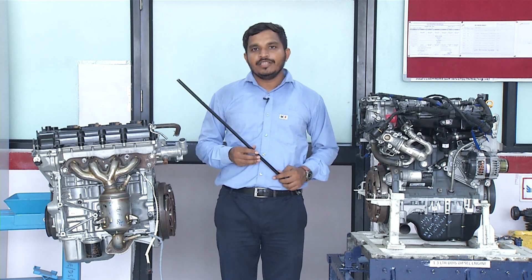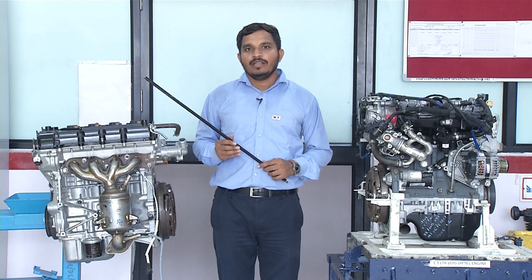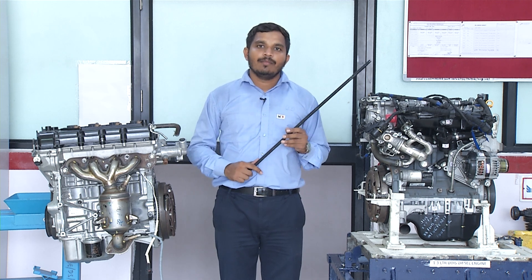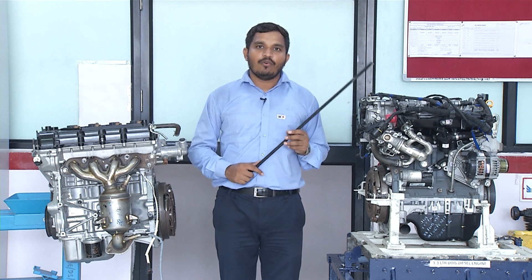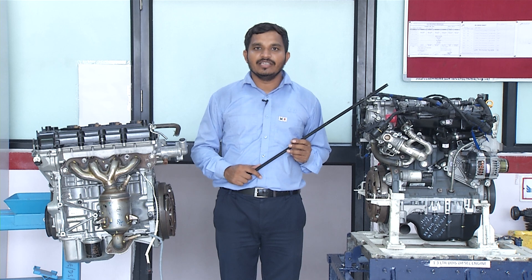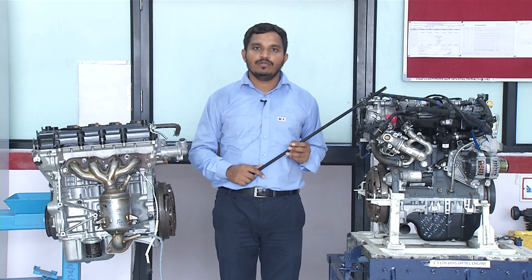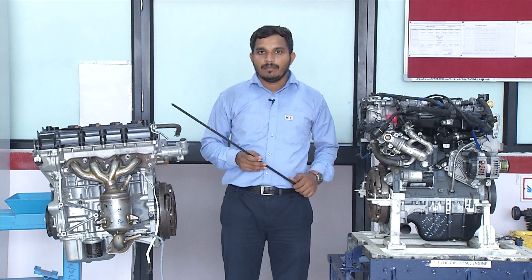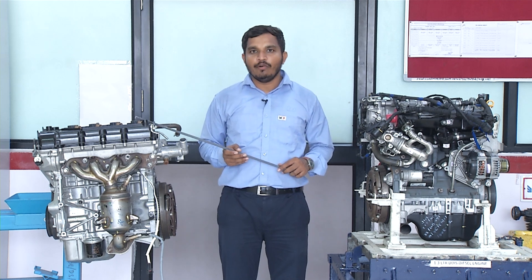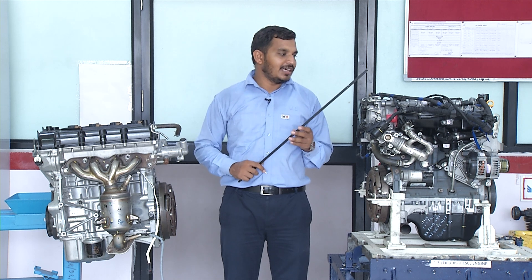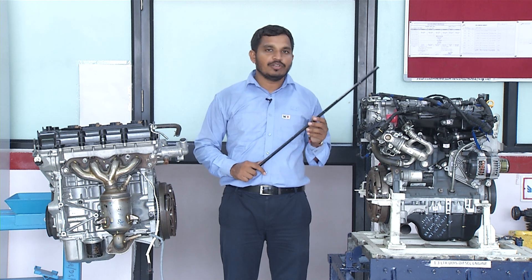A petrol engine can be used in two-stroke and four-stroke configurations, while a diesel engine goes to four-stroke only. The two-stroke motor engine can operate on a constant volume cycle, whereas the diesel engine operates on a constant pressure diesel cycle.